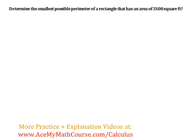Determine the smallest possible perimeter of a rectangle that has an area of 2,500 square feet. Okay, so we want to find out what the length and the width are.